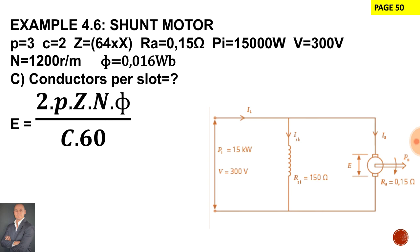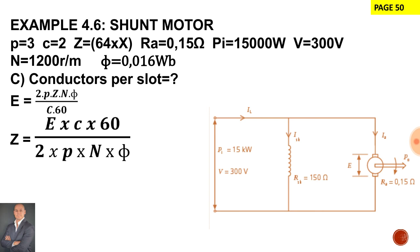Now to manipulate the equation to get Z on its own we will say the generated emf multiplied by the number of parallel paths multiplied by 60 all divided by 2 times the pole pairs, the speed, and the flux per pole.